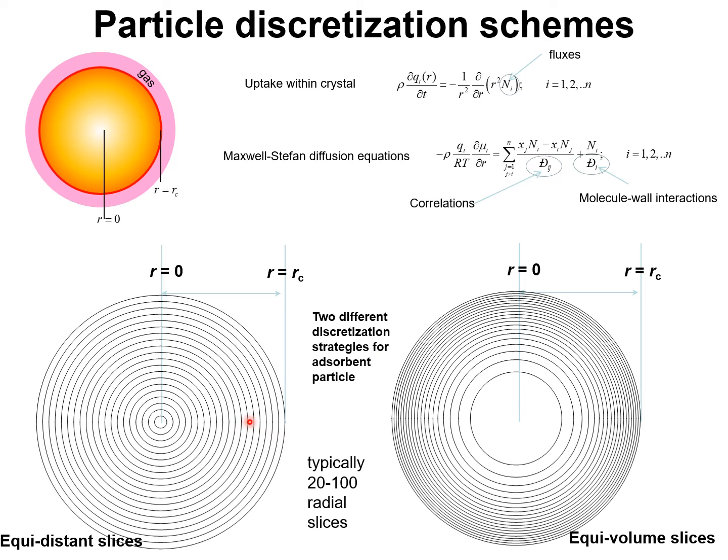The first one is to divide the crystallite into equidistant radial slices. The second strategy is to divide the spherical crystallite into equivolume slices. The equivolume slices strategy is more efficient because the steeper gradients in the molar loadings occur near the surface of the particle, whereas towards the center of the particle, the gradients of the molar loadings are shallower.